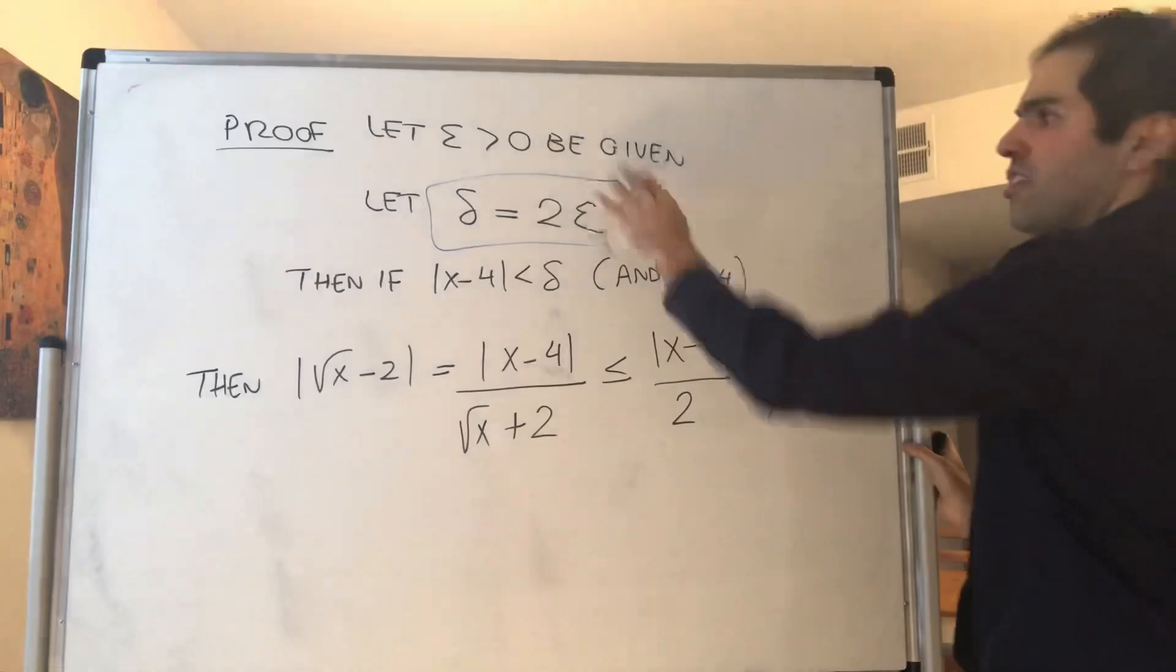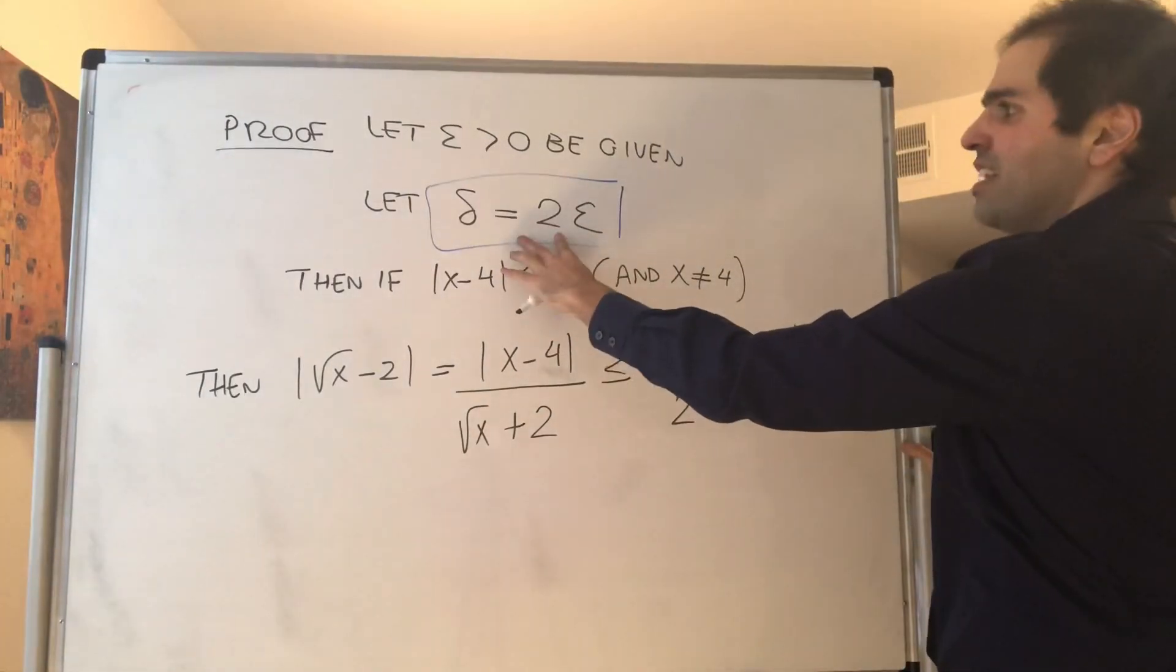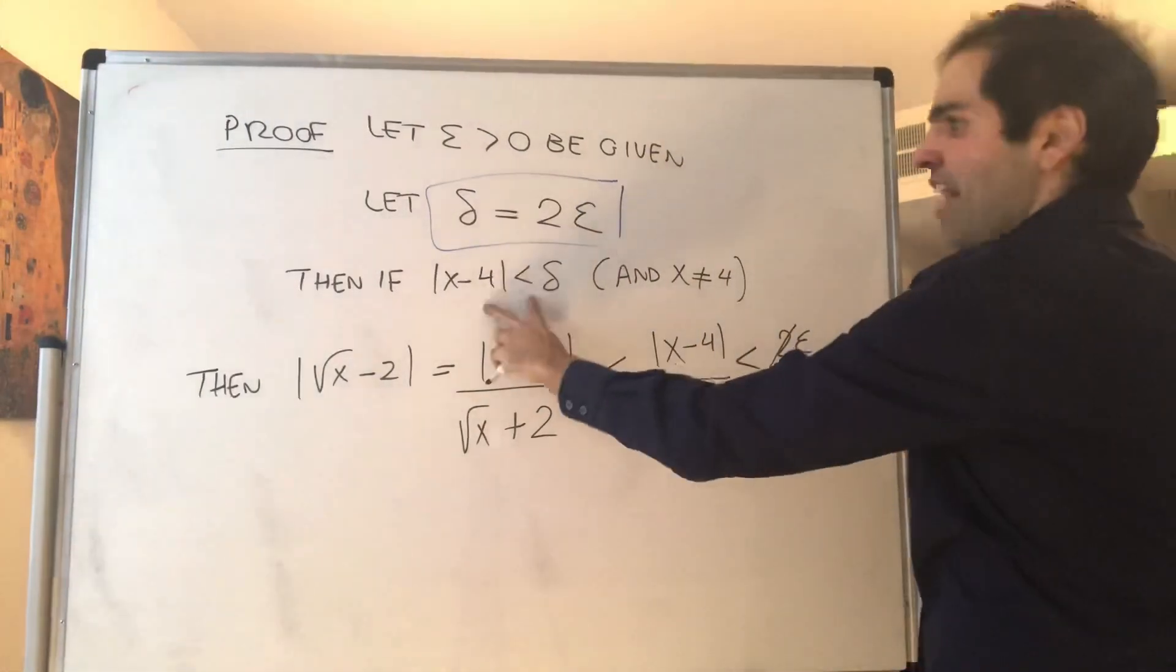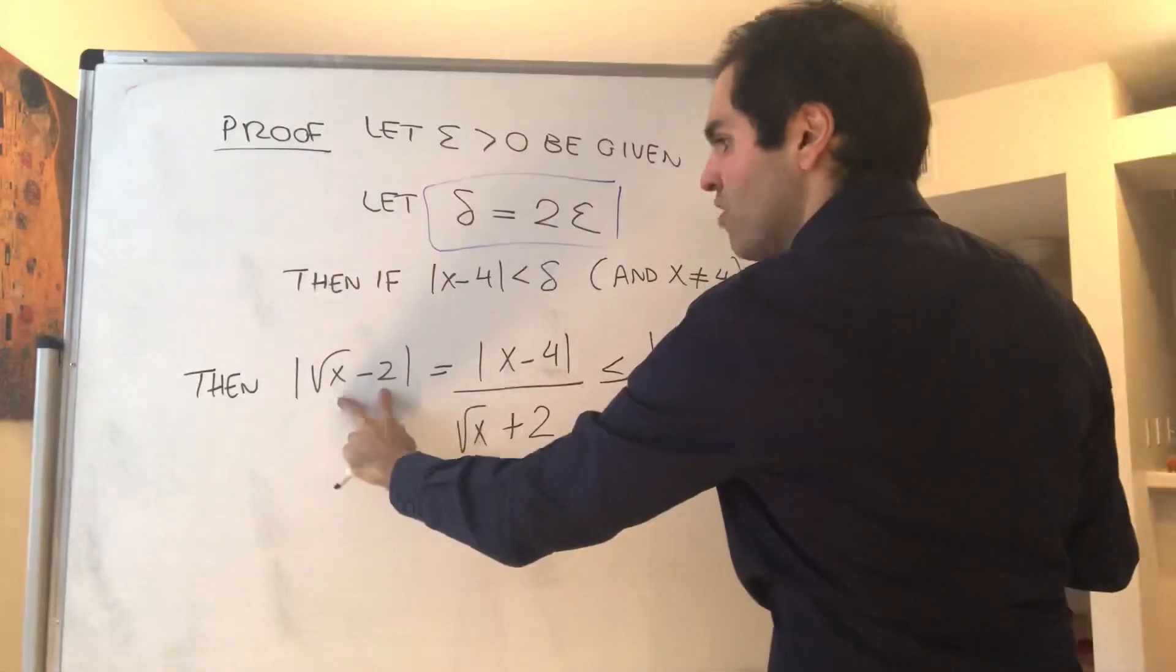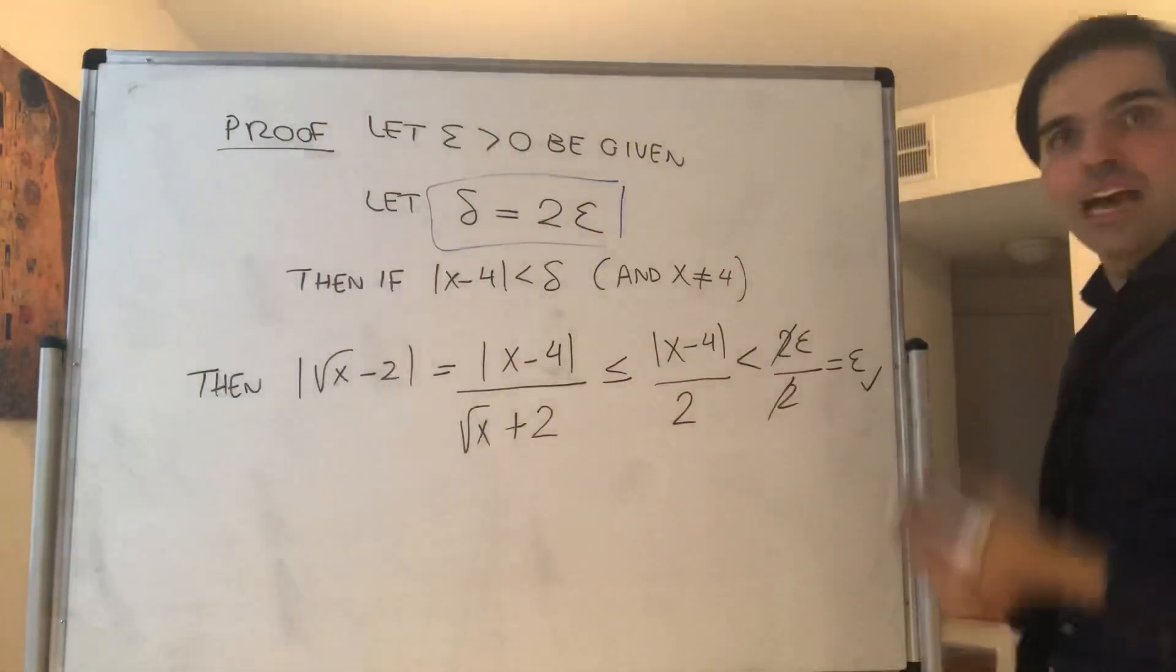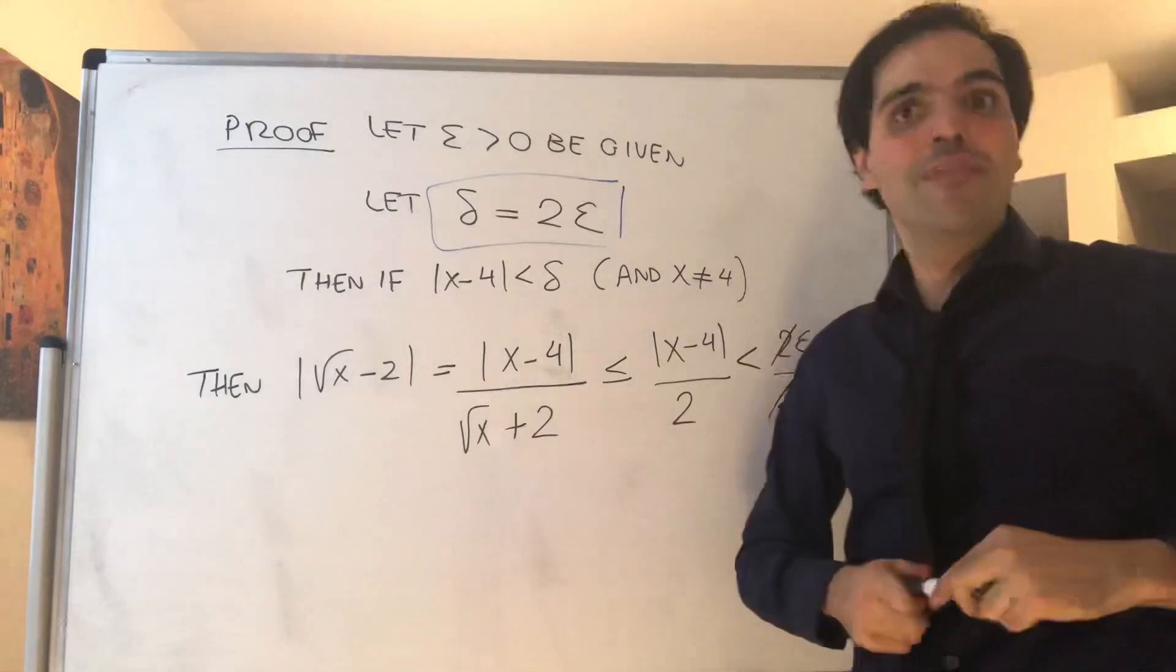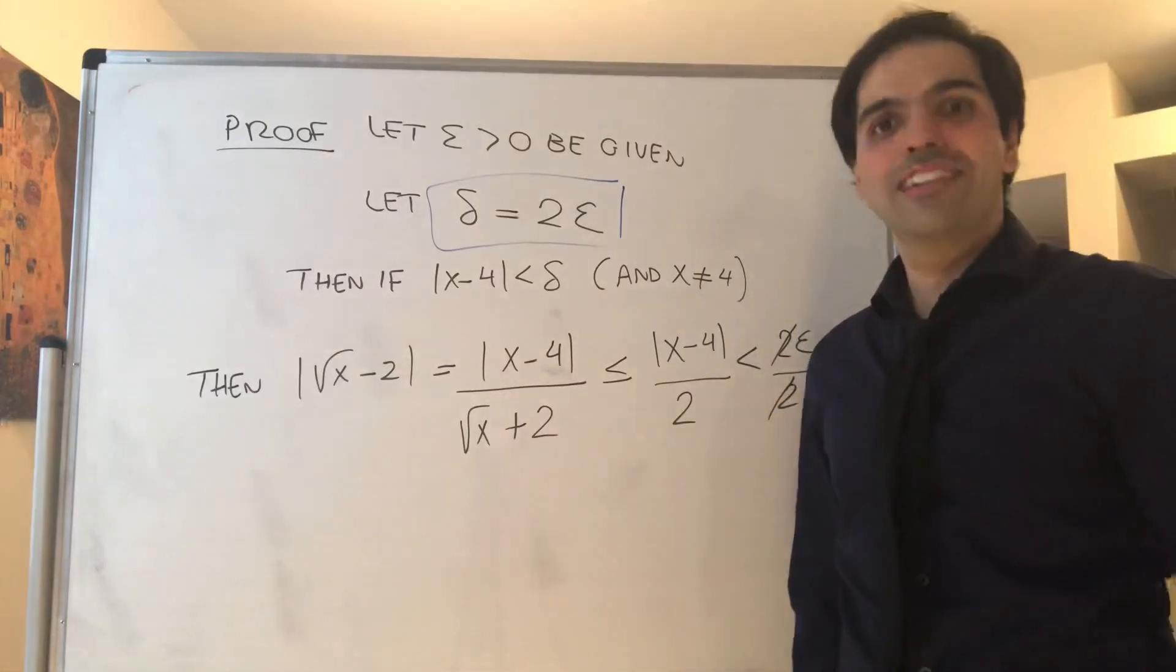Therefore, if epsilon is given, and if delta is 2 epsilon, then if x minus 4 is less than delta, then square root of x minus 2 is less than epsilon. And therefore, the limit has been proven, and we can stay home happy.